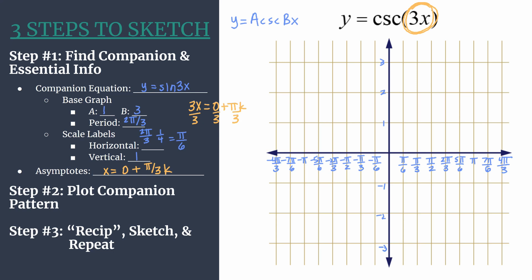Now that we've got analysis out of the way, let's move to step 2 where we will plot our companion pattern. Essentially we're graphing lightly y equals sine 3x. Recall that the sine base pattern is x-intercept starting at the origin, maximum, x-intercept, minimum.